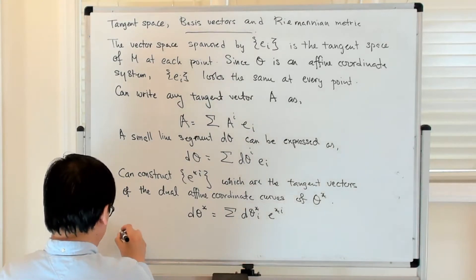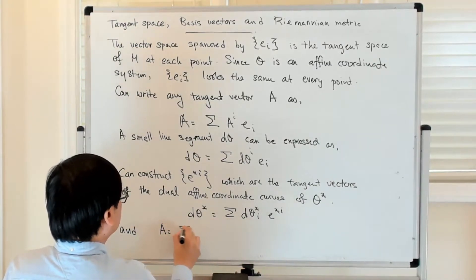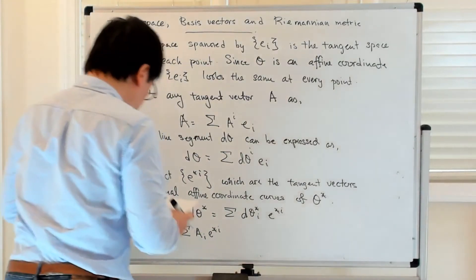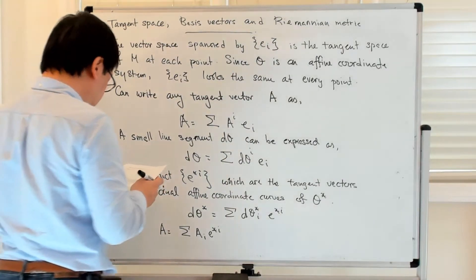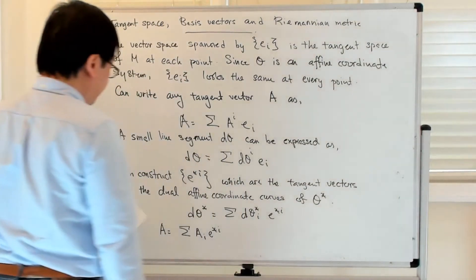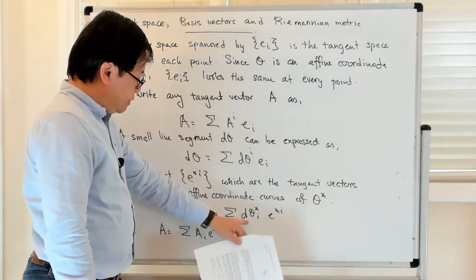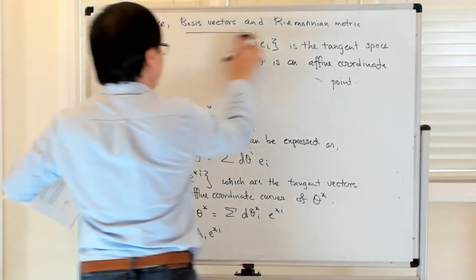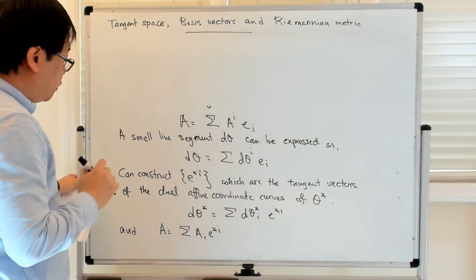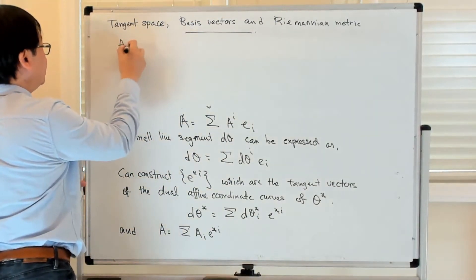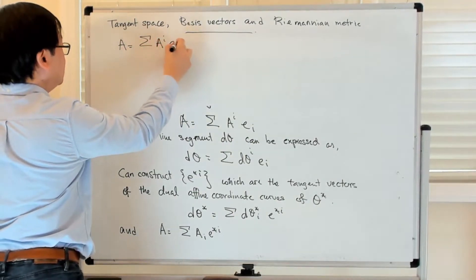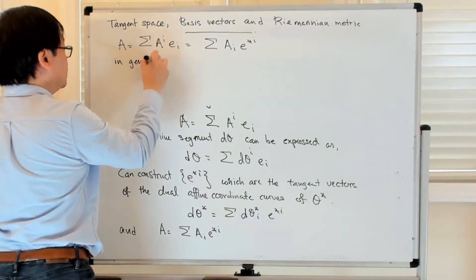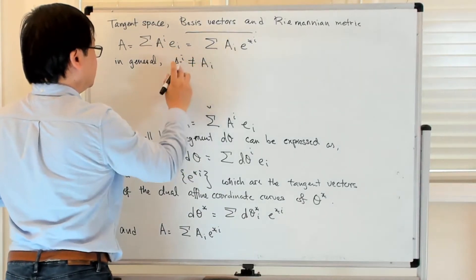I can write a in the dual coordinate system as a_i e*^i. The superscripts and subscripts matter: because you have two coordinate systems with the same tangent space, you can write any tangent vector in terms of either representation. In general, the components a_i are not equal to a^i — a superscript i is not necessarily equal to a subscript i.